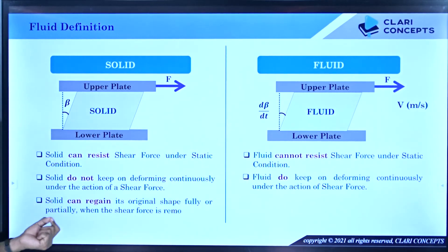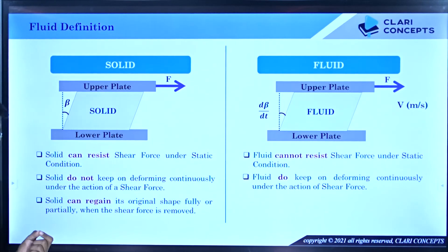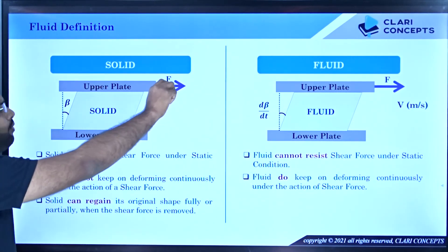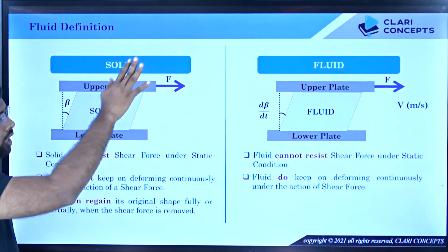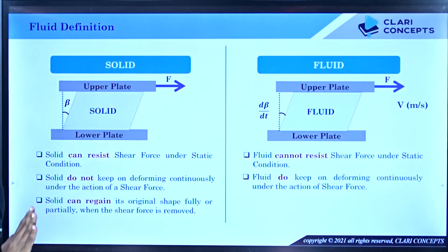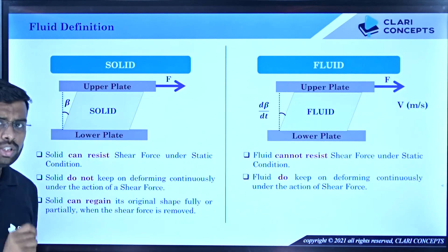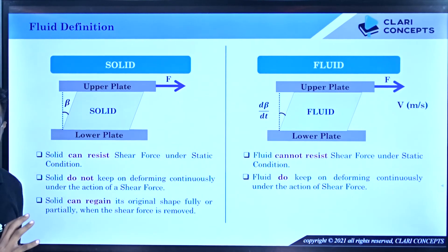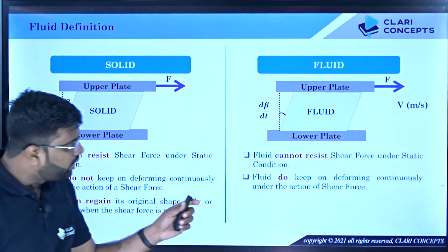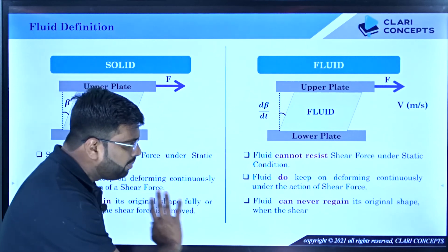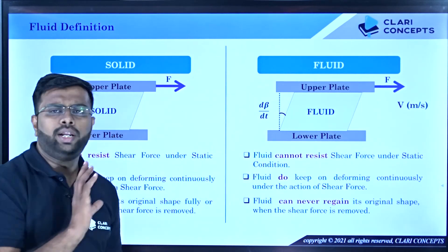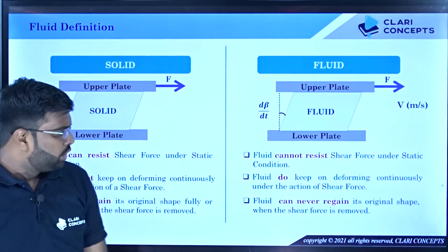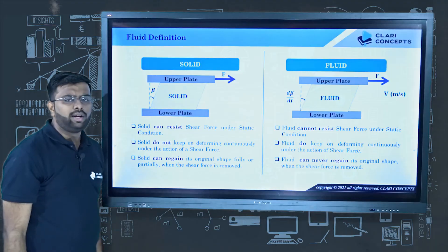The third difference: solid can regain its original shape fully or partially when the shear force is removed. If you remove the shear force from rubber or any elastic material, the original shape will be regained partially or fully depending on whether the threshold was crossed. On the other hand, fluid will never recover its original shape once deformed.